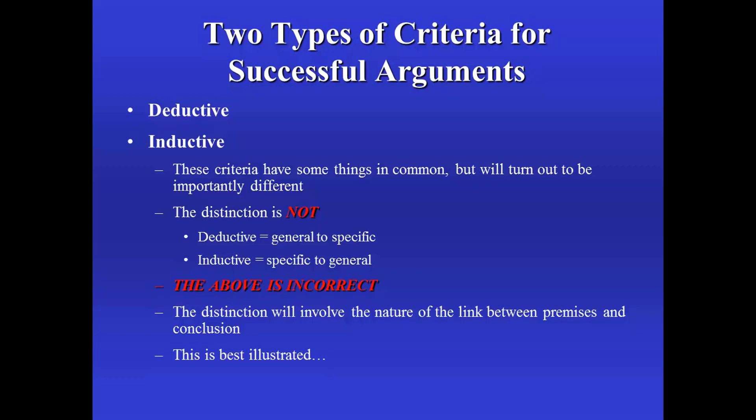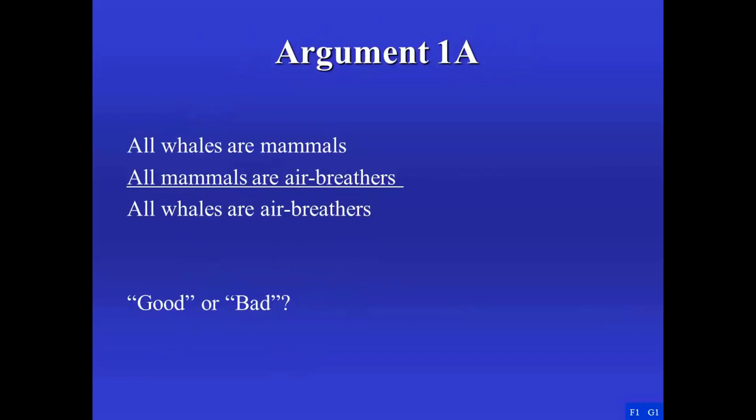This is something that's best illustrated, and it may take a little bit of time to see exactly what the distinction is. Let's focus on some actual arguments. We'll call this example argument 1a. All whales are mammals. All mammals are air breathers. Therefore, all whales are air breathers. Now one vague question we might ask is, is this a good argument or a bad argument? We're going to need to be more precise about how we're evaluating this argument. But you may have a sense just looking at it that it's a pretty good argument.